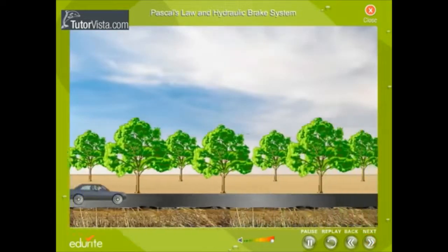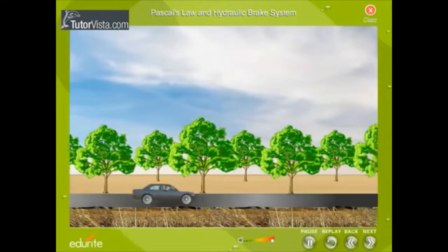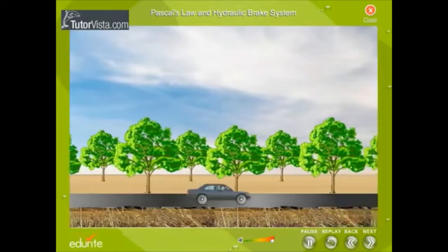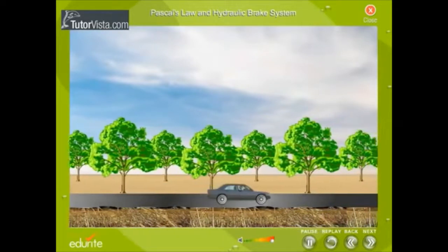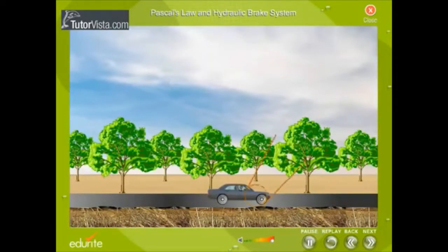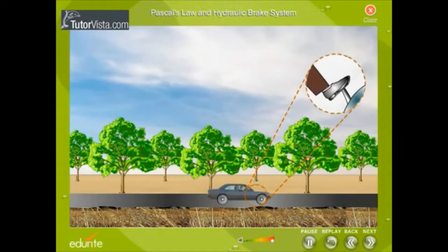We all know that a car slows down and stops when we apply brakes. But how does this happen? How does the force exerted on the foot pedal stop or slow down a car? How does it multiply the force so that it is enough to stop something as big as a car?